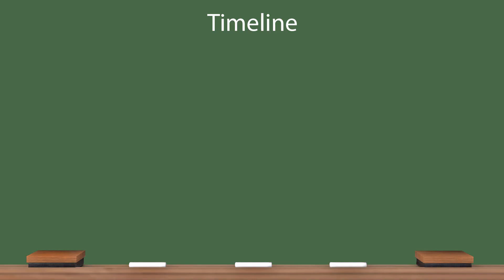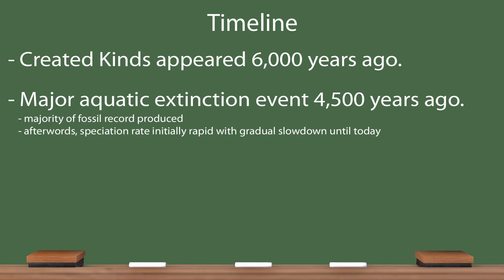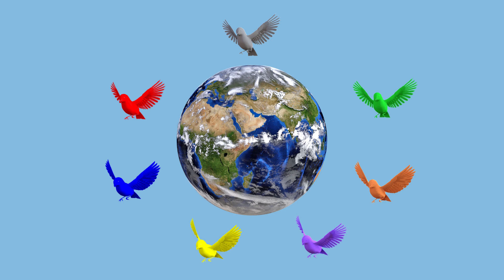The fourth section of the model I would like to look at is the historical timeline. The original kinds appeared approximately 6,000 years ago, and later suffered an aquatic extinction event about 4,500 years ago, during which most of the fossils found today were laid down. Because of changing environments, speciation occurred rapidly at that time. Due to relative consistency of habitats today, speciation has slowed drastically. The original computer bird kind appeared on Earth about 6,000 years ago, and speciation began and continued until a major extinction event occurred about 4,500 years ago. We do not know what the surface features of those species looked like, but we have the fossils to recognize the form has not changed.